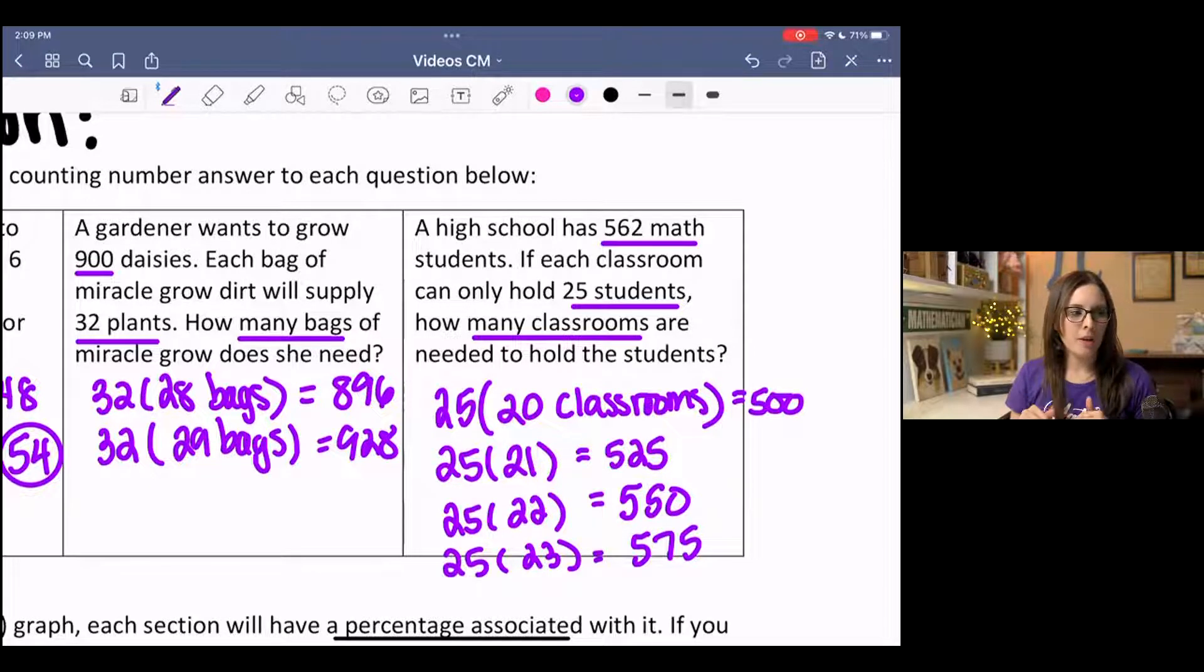So in the second one, the gardener wants to grow 900 daisies. Each bag of miracle grow dirt will supply 32 plants. So how many bags does he need to buy in order to cover all the plants? So I did 32 times 28, which was too low, and did 32 times 29, which was over.